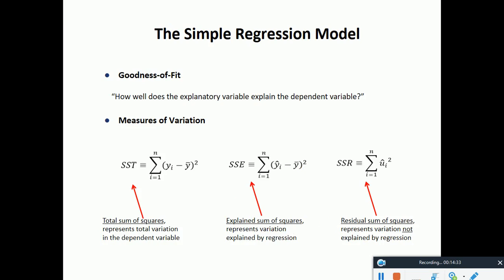Goodness of fit is how much of the variation of y is being explained by the variation of x. If x is varying and the variation of y is well explained by x, we call that R-squared. R-squared measures the goodness of fit. In an exam definition question, you can say: how much of the variation of the dependent variable is being explained by the variation of the independent variable.